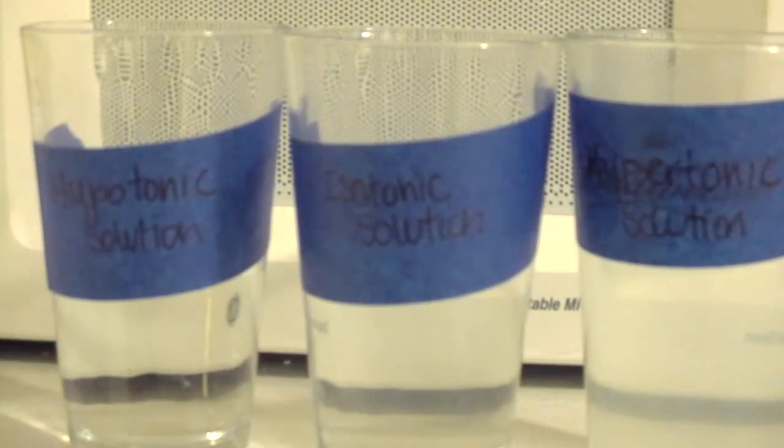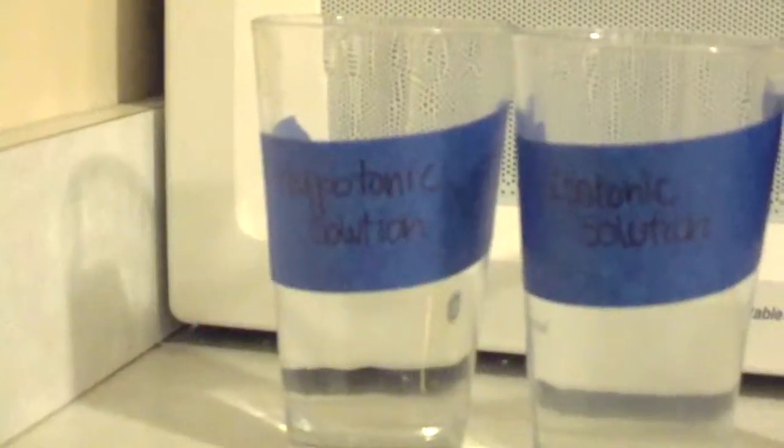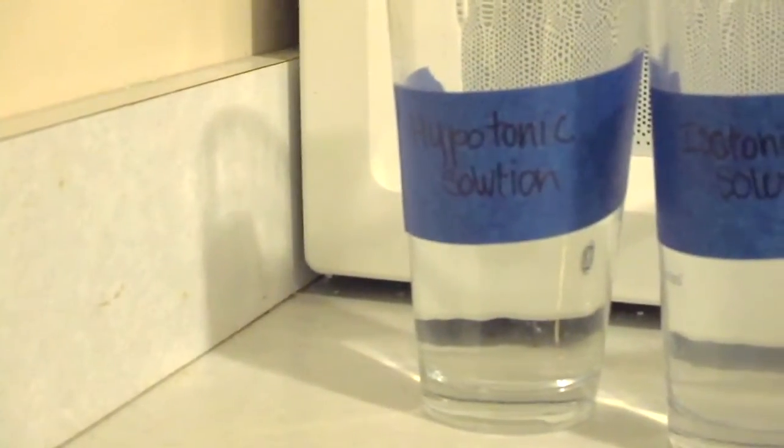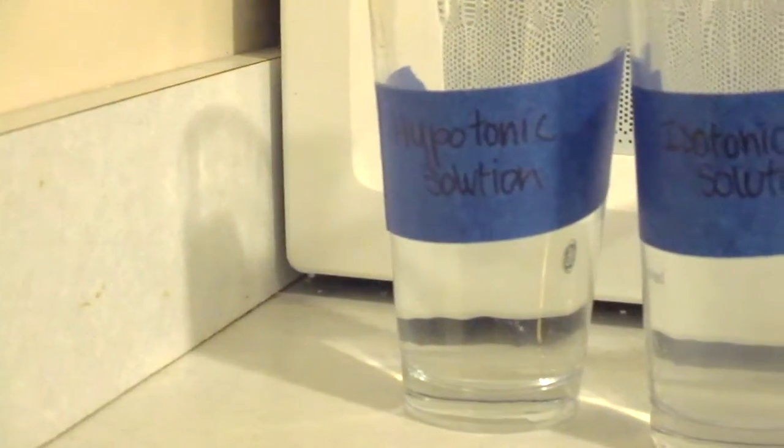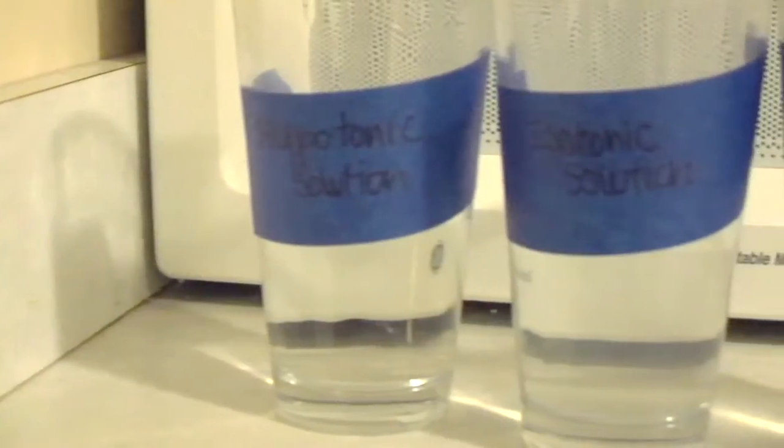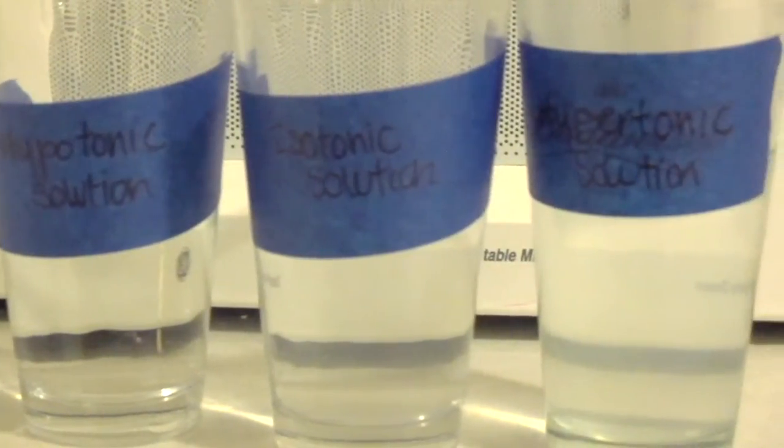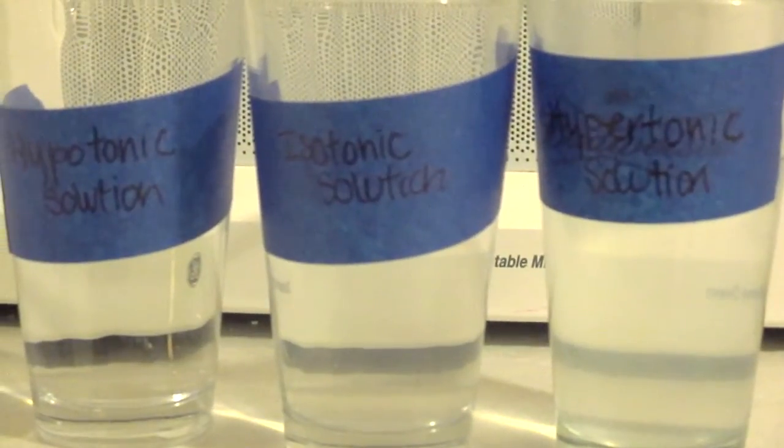Now that I have my solutions prepared, I'm going to put an egg in the hypotonic and the hypertonic solutions and see what happens with those. Then I'm going to swap them and see how that affects the egg. Then I'm going to take one of them out, probably the hypertonic, and put that into the isotonic solution and see if that corrects what the hypertonic solution did to the membrane.